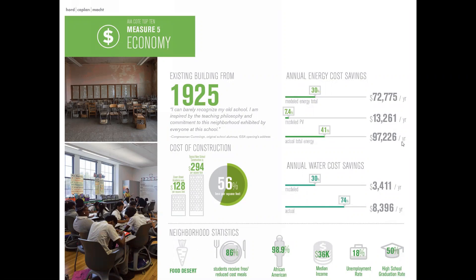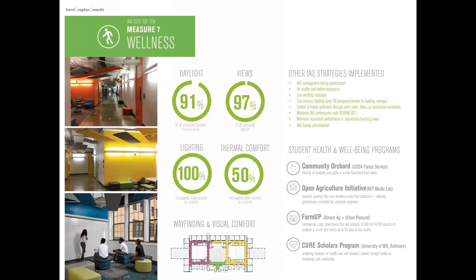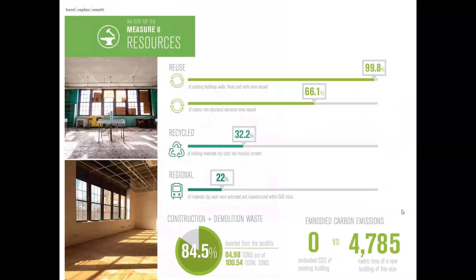For economy, the team showed that a 41% energy cost savings means $100,000 per year to a Baltimore City school — real money that can be used on education. The tab also included neighborhood statistics for the West Baltimore neighborhood. For energy, they used different graphs comparing modeled and actual performance, listing energy use intensity and carbon emissions, and again converting carbon to something people can visualize, since carbon is really hard for people to conceptualize.